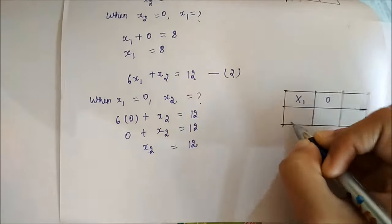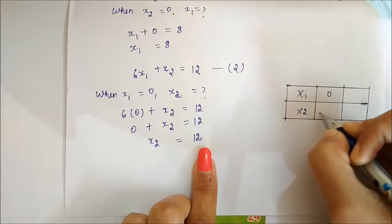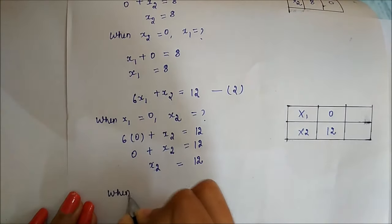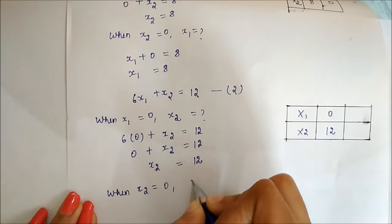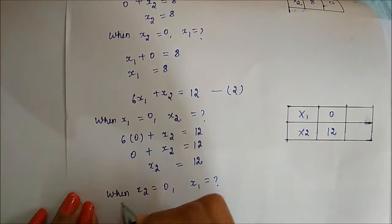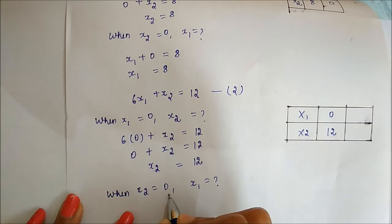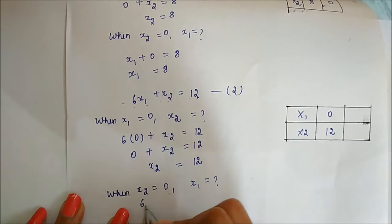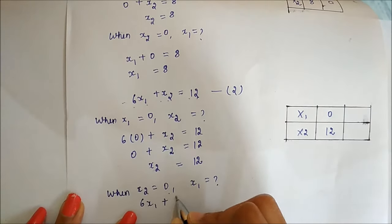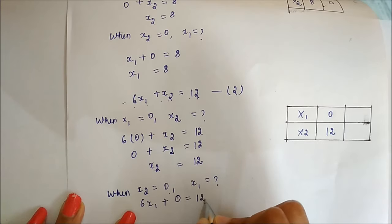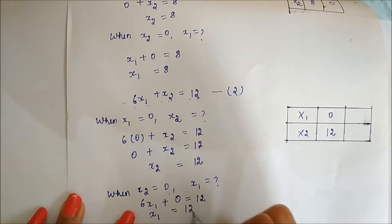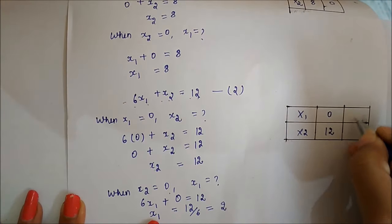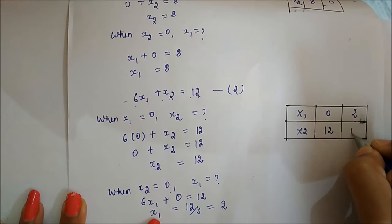When x1 is 0, x2 value is 12. So the first intercept is x1 equals 0 and x2 equals 12. When x2 is 0, 6x1 equals 12, so x1 equals 12 divided by 6, which is 2. So x1 is 2 and x2 is 0.